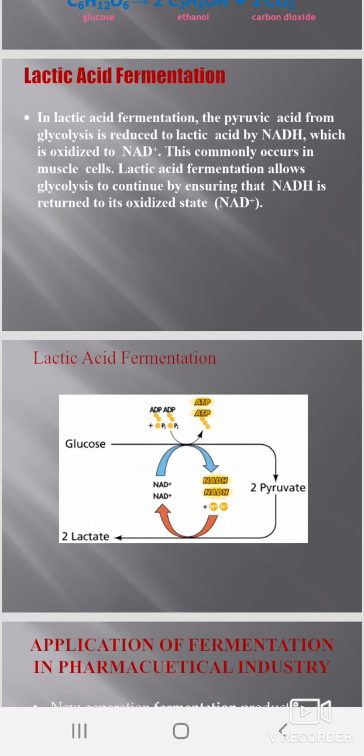You can see the diagram of lactic acid fermentation: glucose goes to 2 pyruvate by the removal of 2 ATPs, and NADH is converted to NAD positive. The 2 pyruvate are then converted and go into 2 lactate.